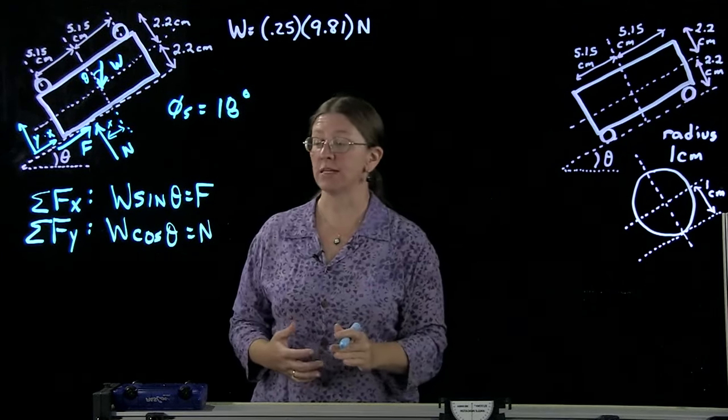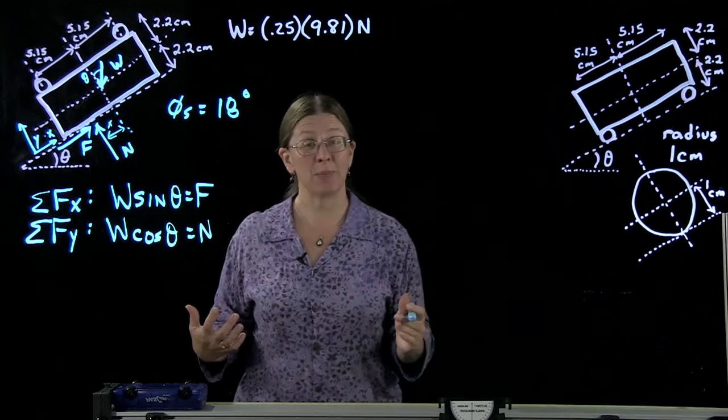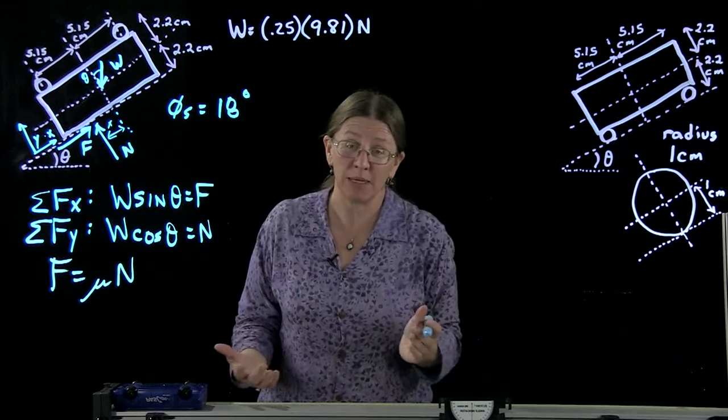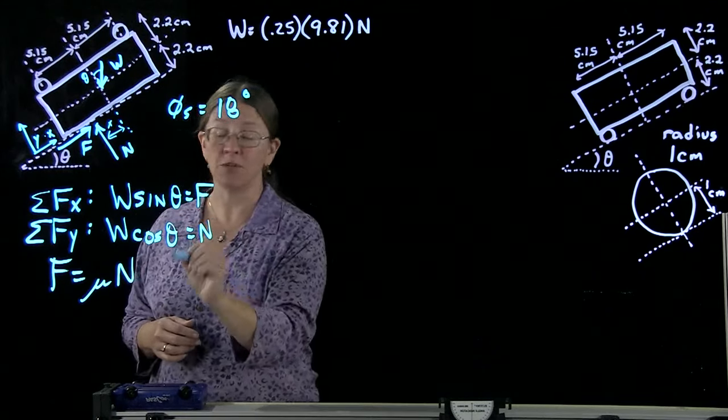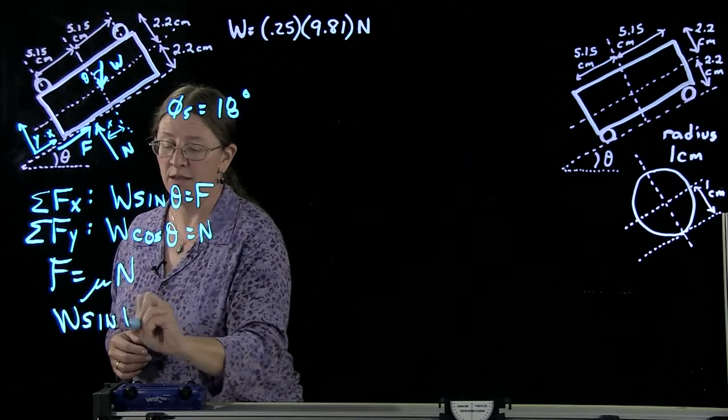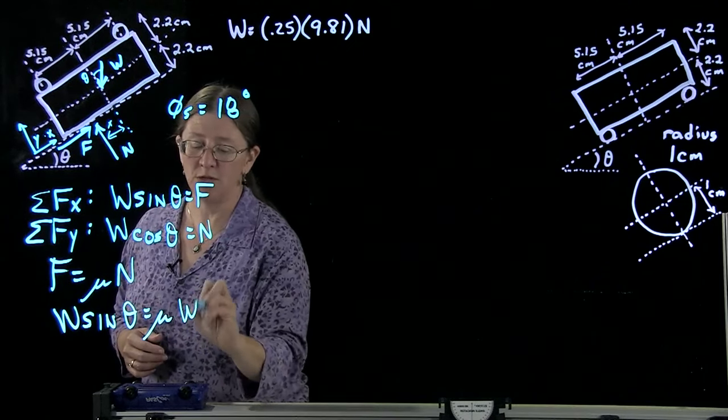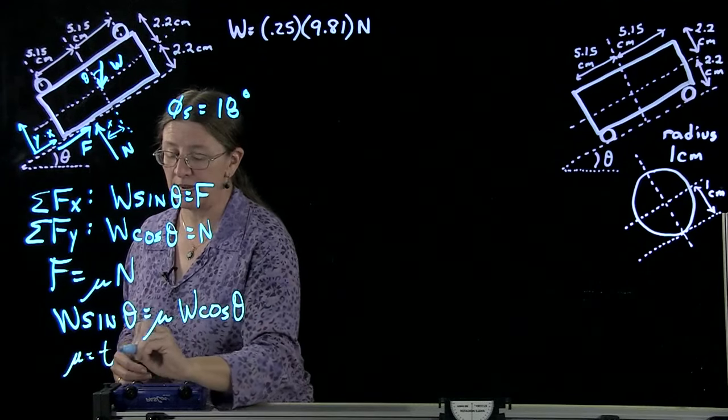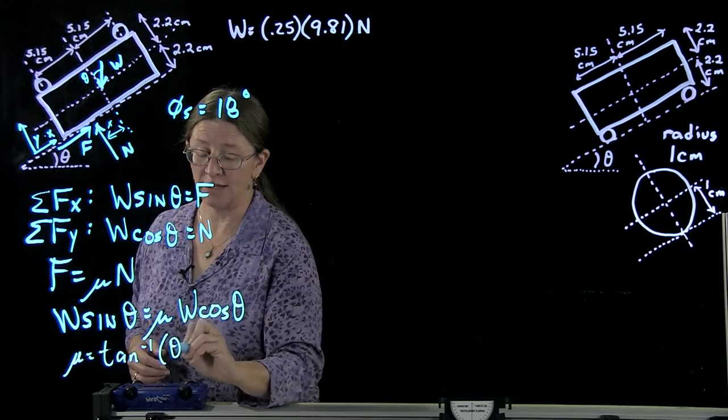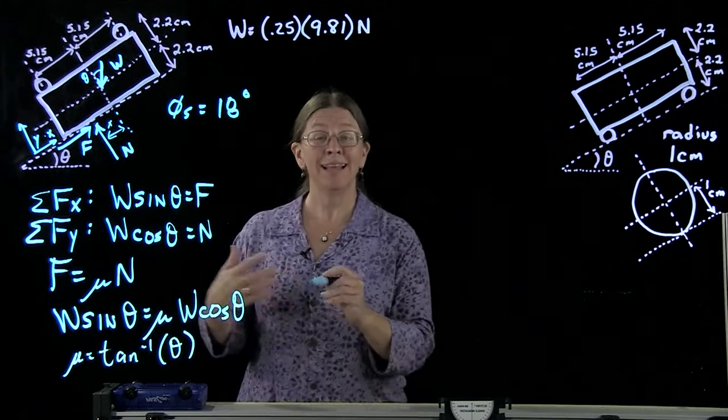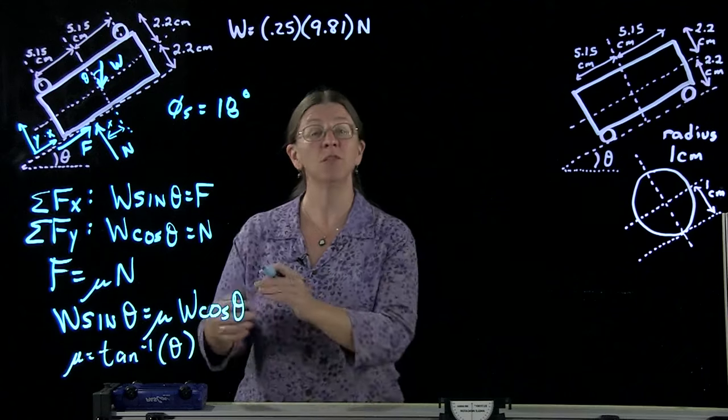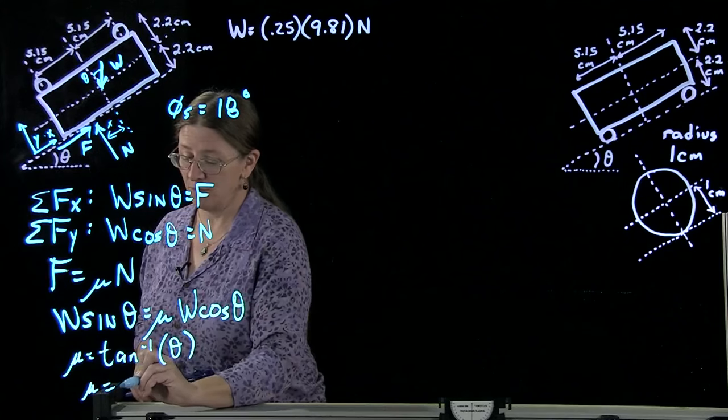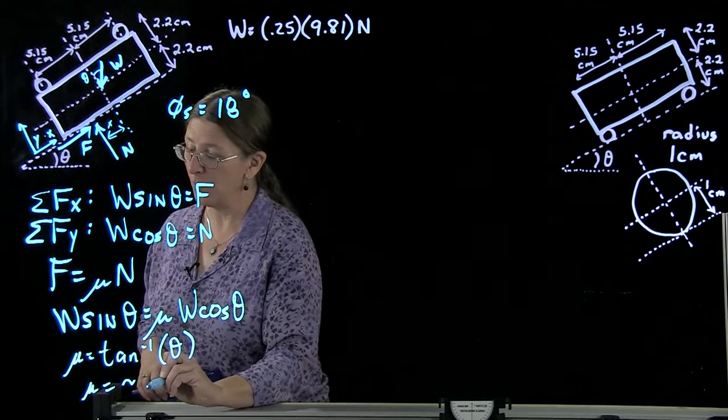So the sum of the forces in x just gives me w times sine theta equals F. And the sum of the forces perpendicular to the track tells me that w cosine theta is N. Now, once you have those things, what you want to say is when does it slip? So I want to know what the slipping condition is. Slipping condition is always the same: F is mu times N. That's the only slipping condition you ever get. So given that we have F is w sine theta, what I really have is w sine theta equals mu times w cosine theta. That allows you to solve: mu is the arctan of this angle that we just found. That's the same thing as the definition of the angle of static repose. It's very nice when you can derive a formula that you've seen before.